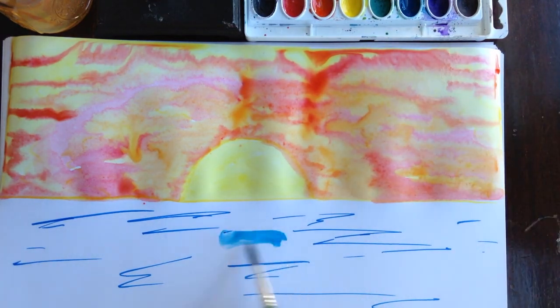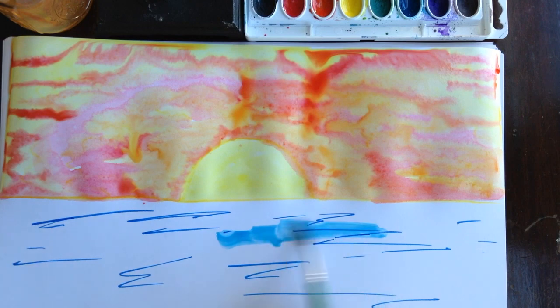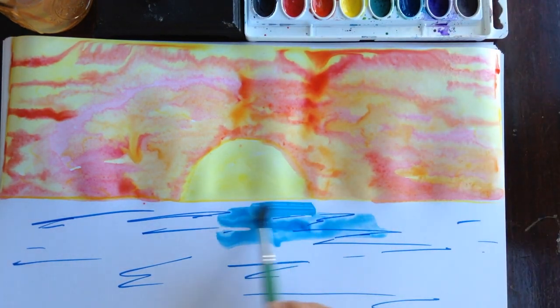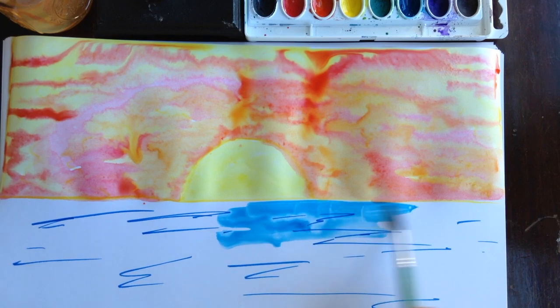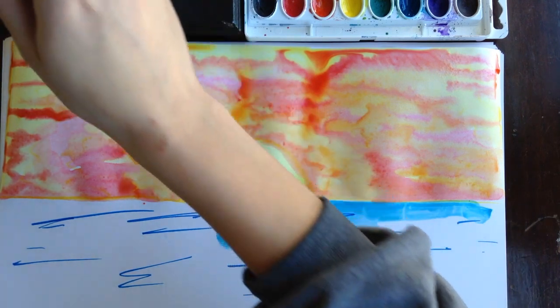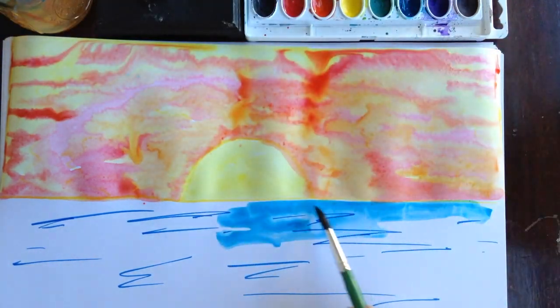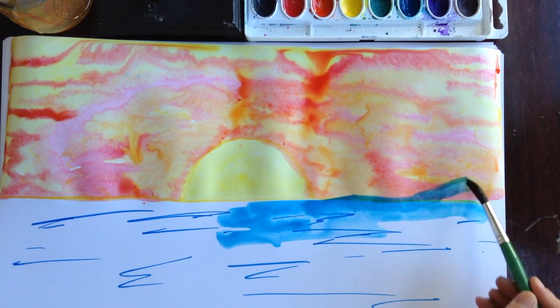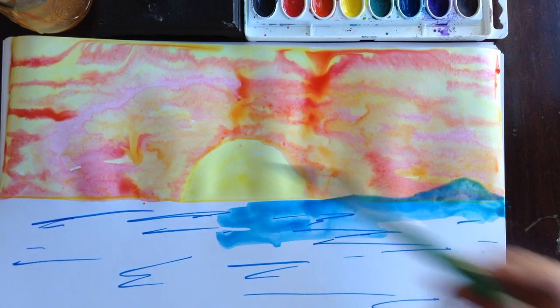And again, if you don't want to do water on the bottom, you can do grass or other things. If you don't want your horizon line to be a perfect line, you can add some hills in the background. Maybe it turns into mountains.